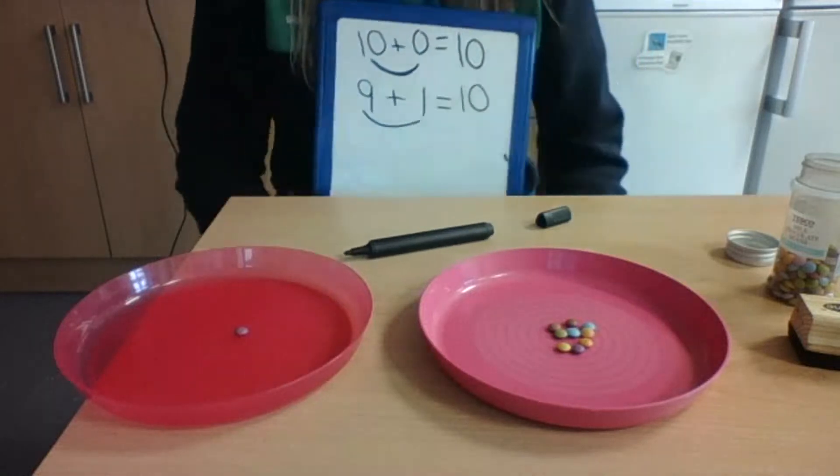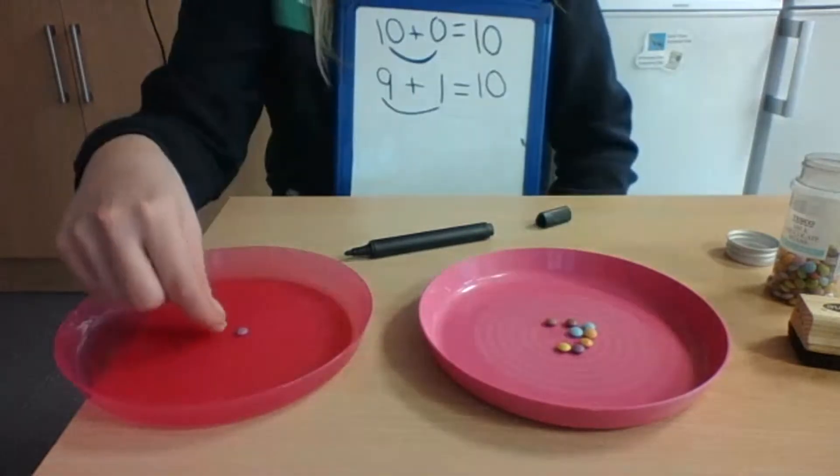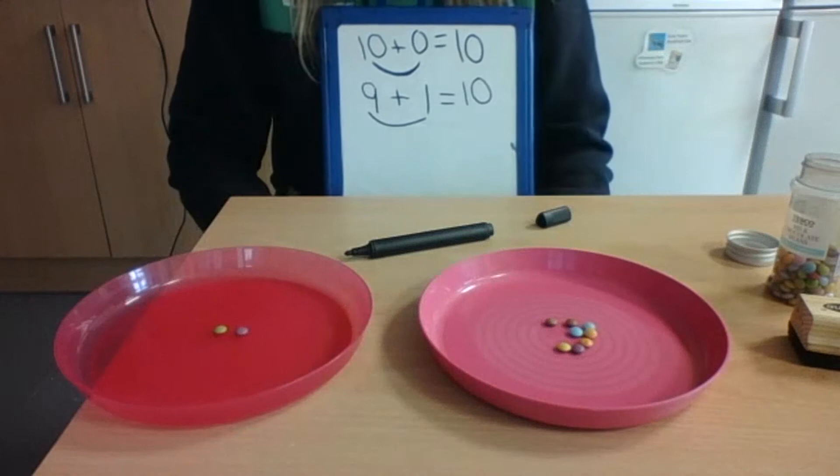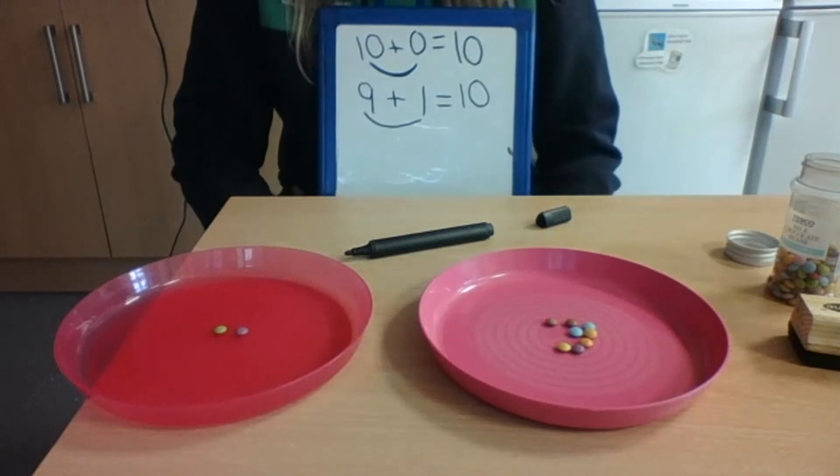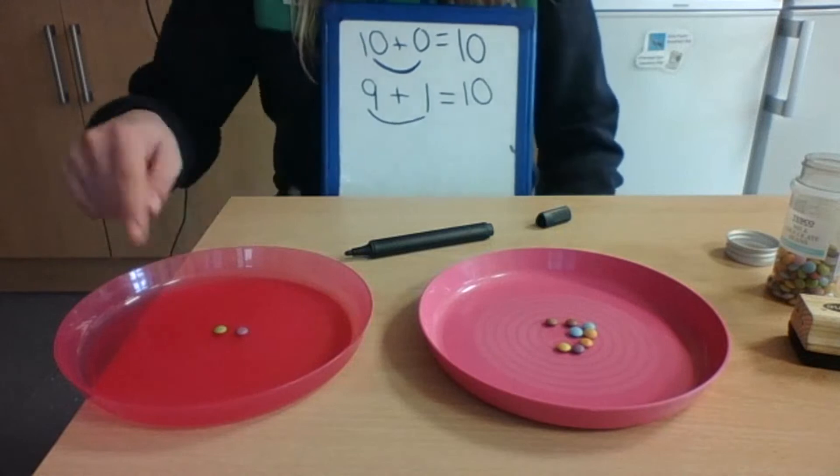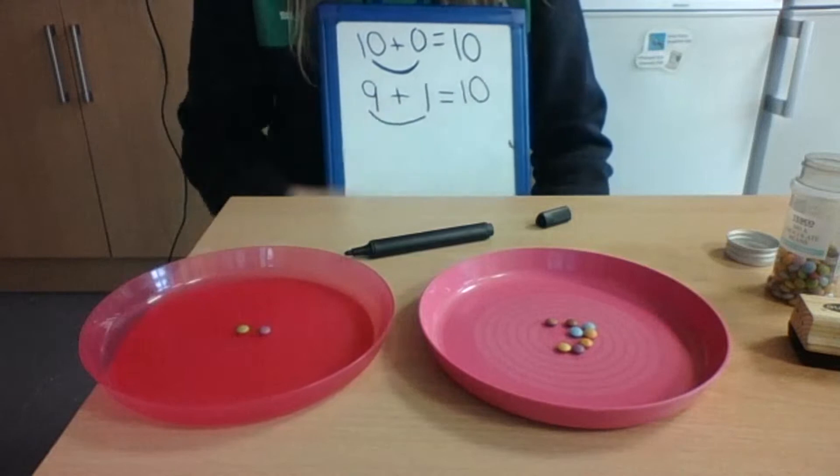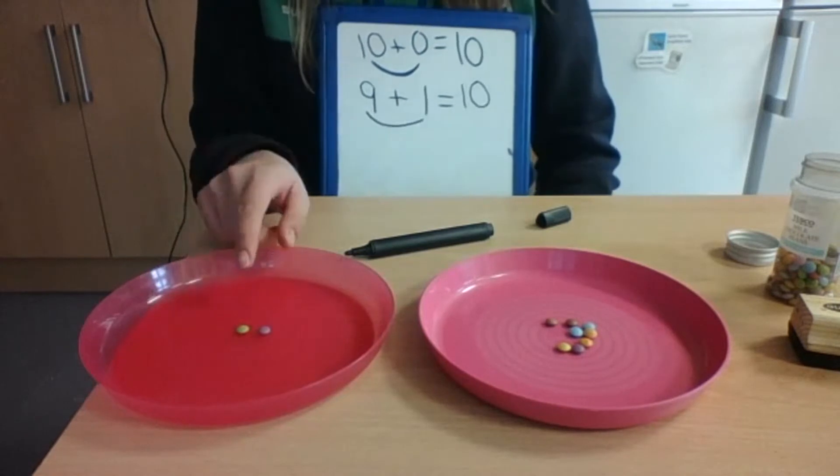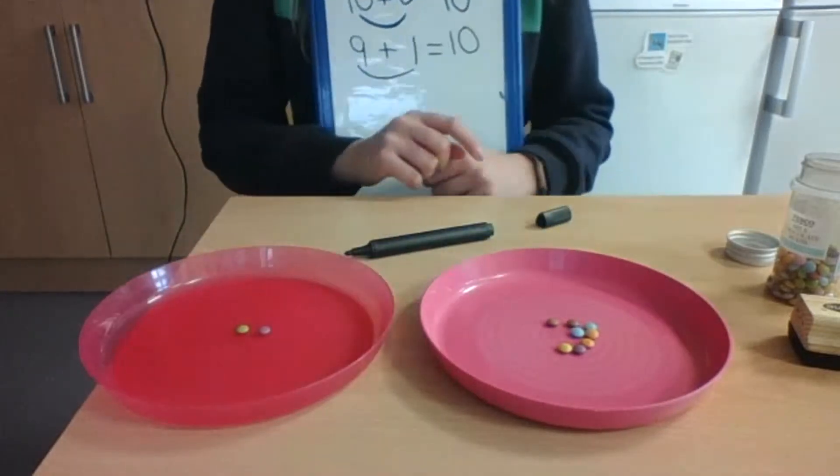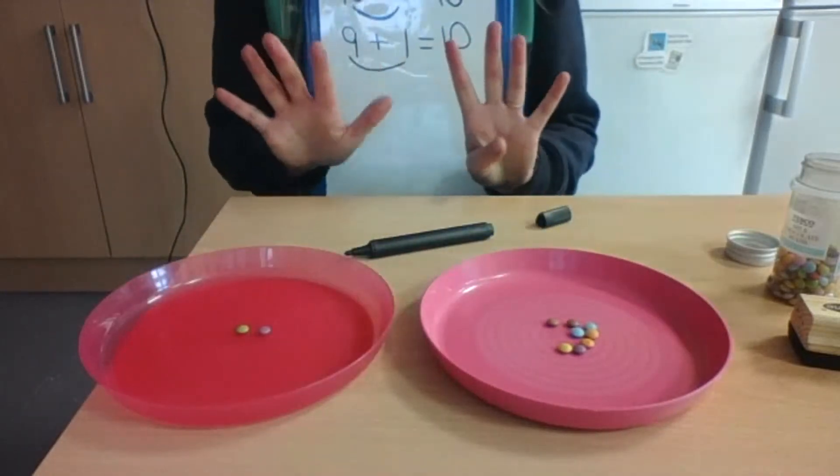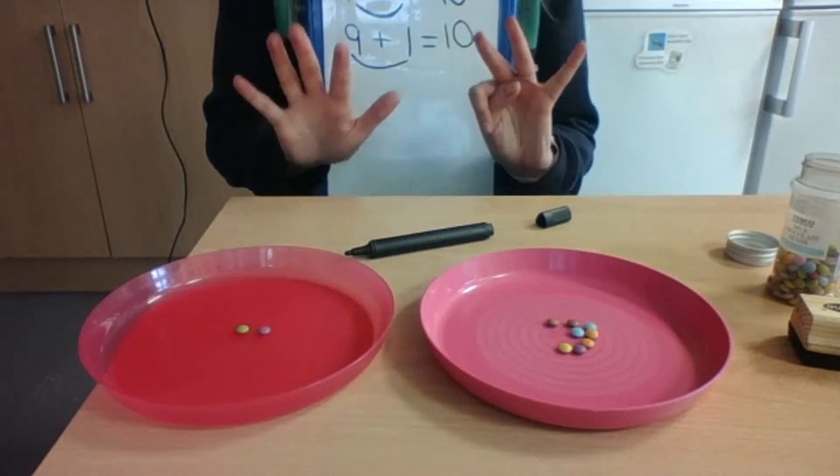Now we're going to do one more. I'm going to move another smartie to this red plate. What's happened? Well, if you have a look, I've added some to the red plate. Now without counting, how many are there? There are two smarties. Now there were 9 smarties on here, but I've taken away another one. So how many have we got now? 8.